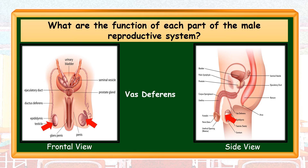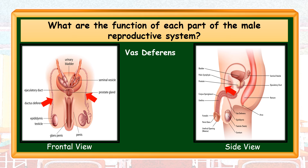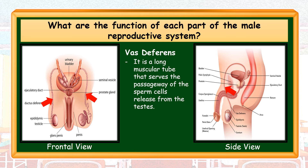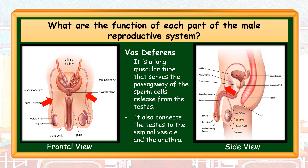Vas deferens — it is a long muscular tube that serves as the passageway of the sperm cells released from the testes. It also connects the testes to the seminal vesicle and the urethra.